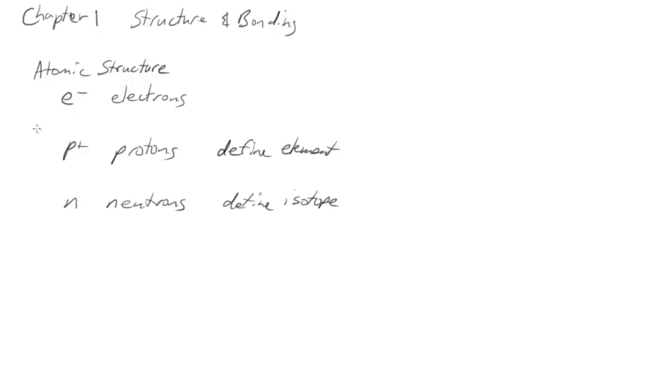Neutrons define the isotope of that element. We'll work with elements a lot in here. Isotopes we won't talk about a whole lot in lecture class, but when we look at mass spectrometry during lab, we'll talk more about isotopes and different neutrons, like carbon-12, carbon-13, carbon-14.